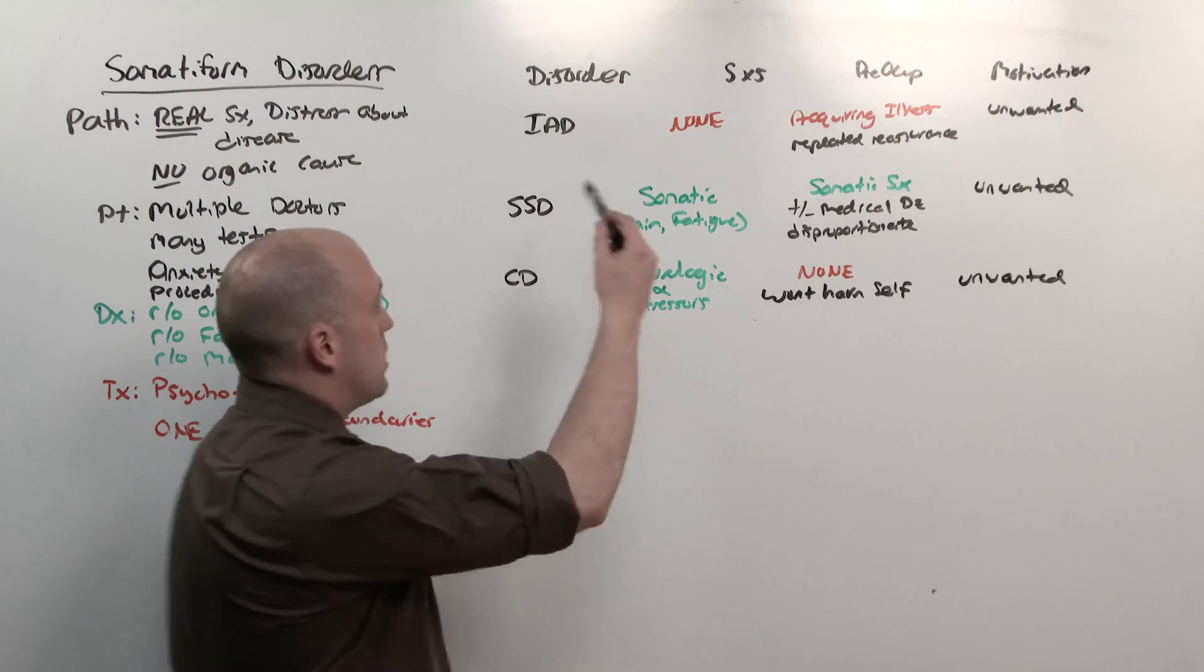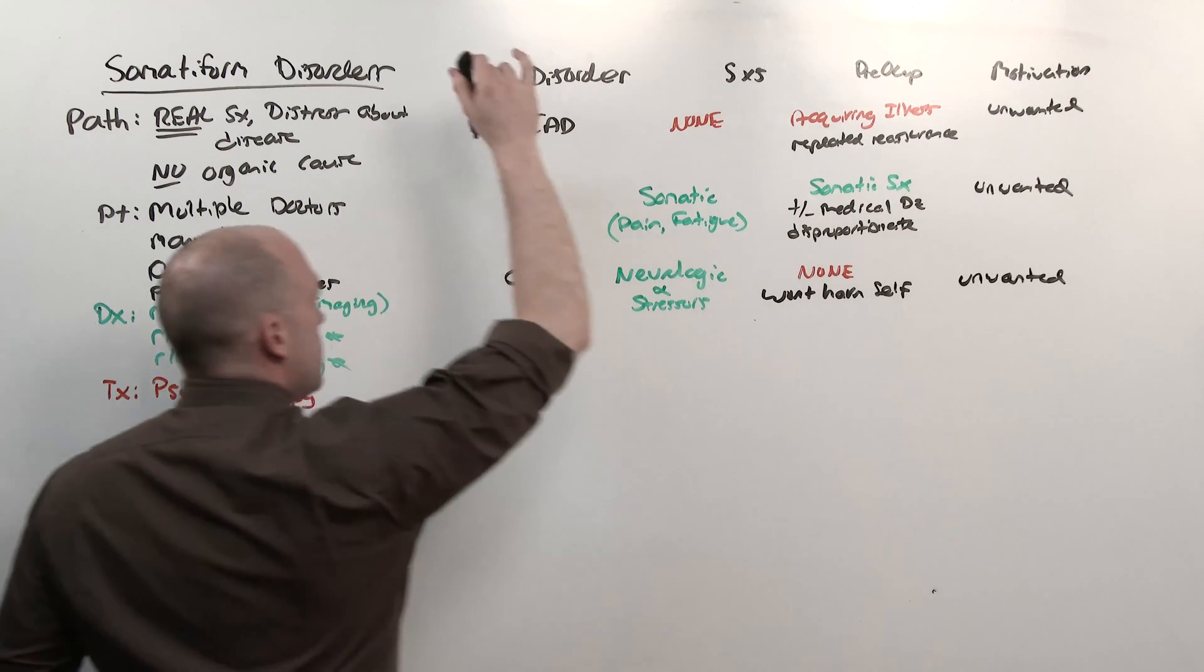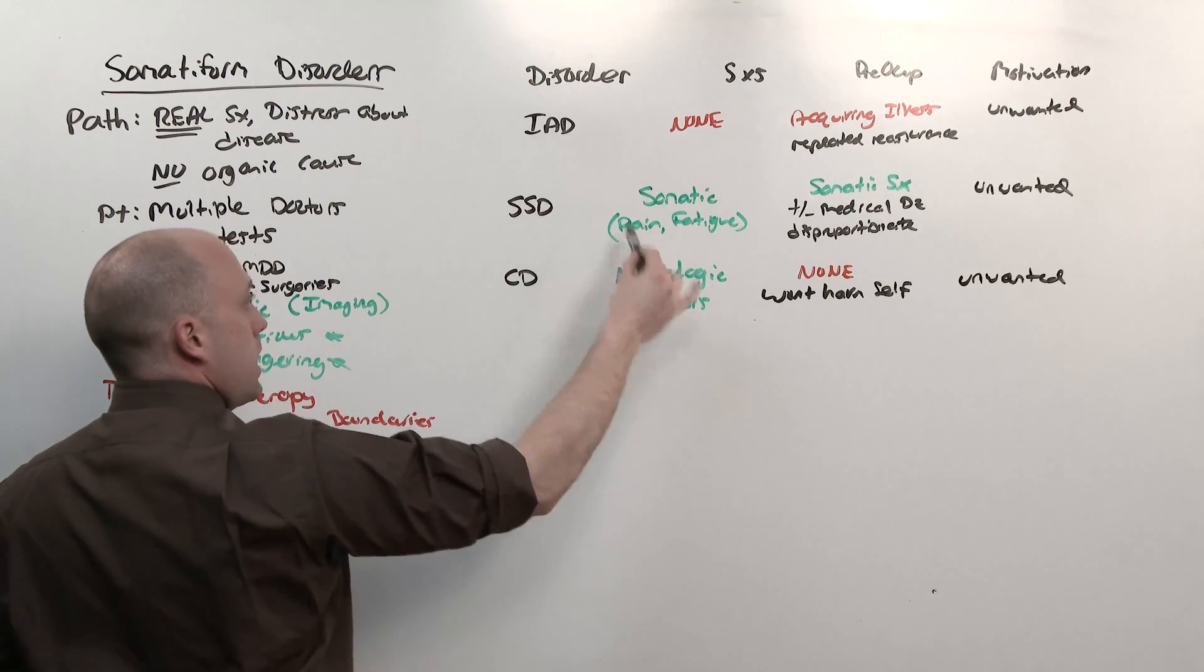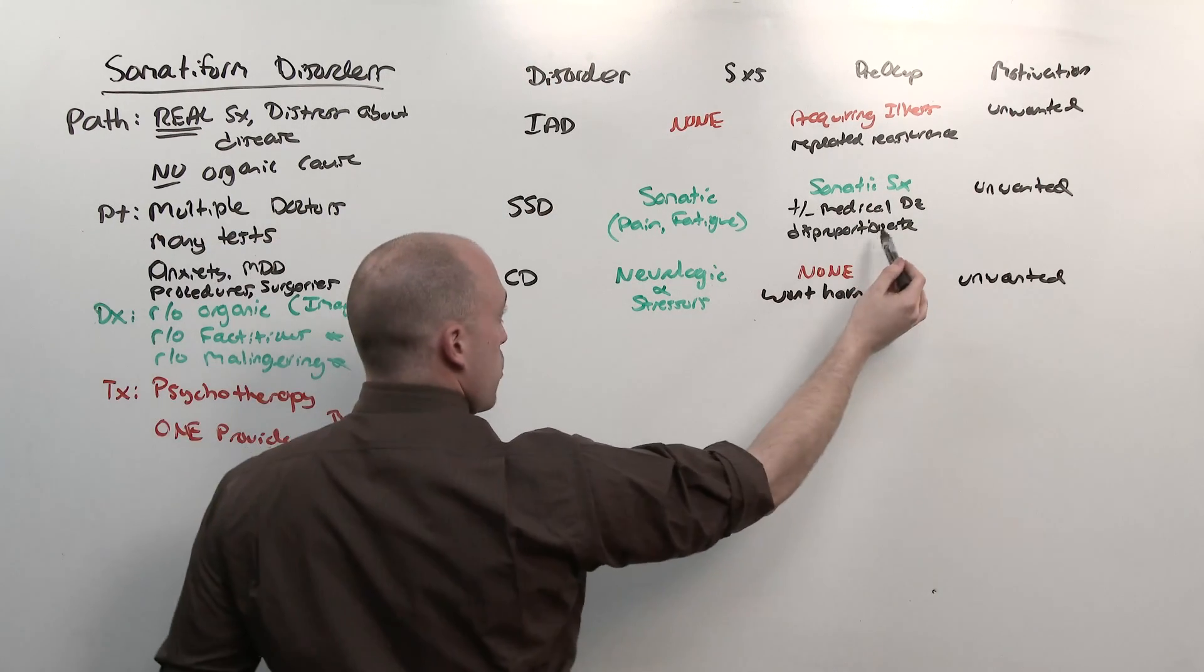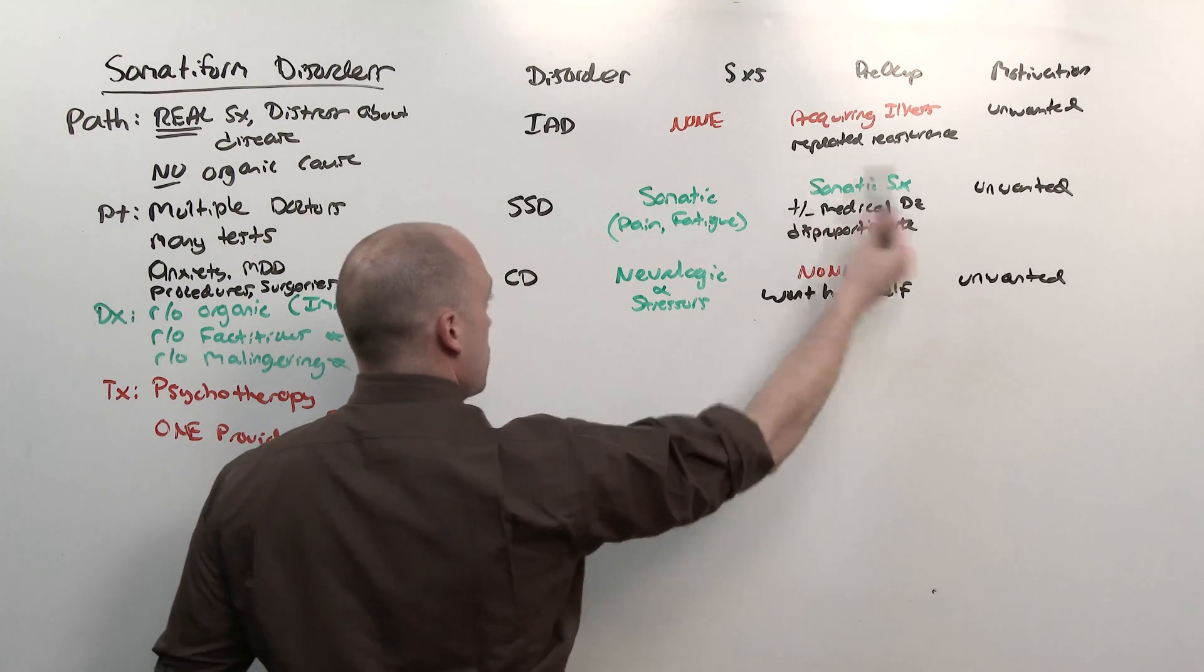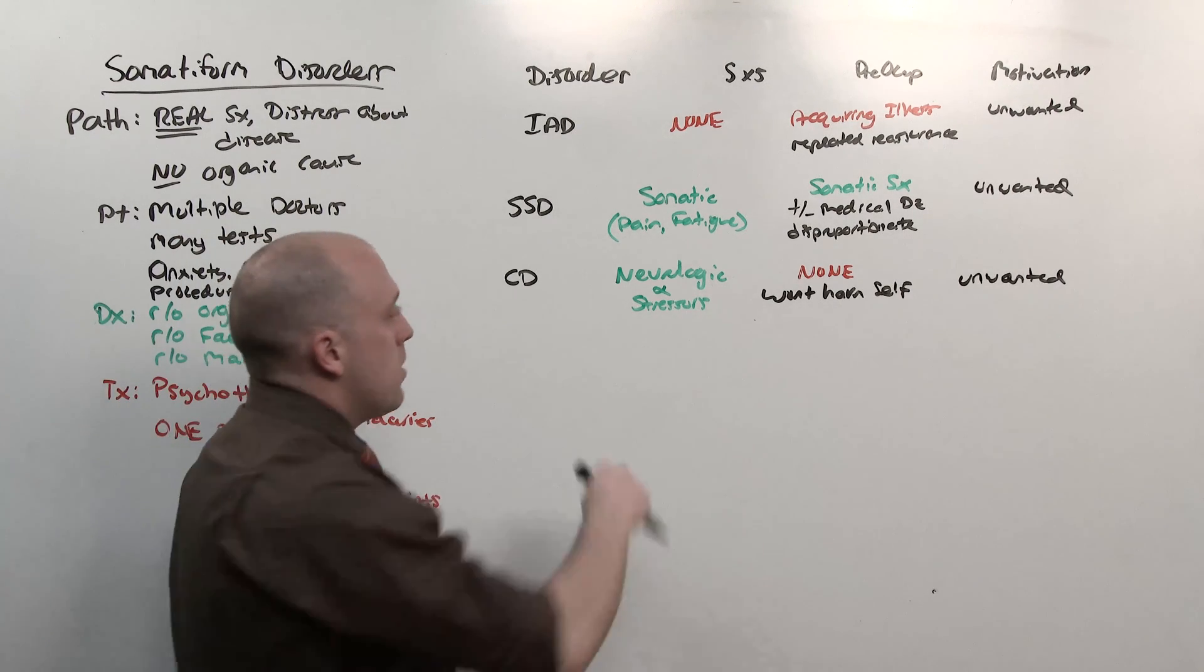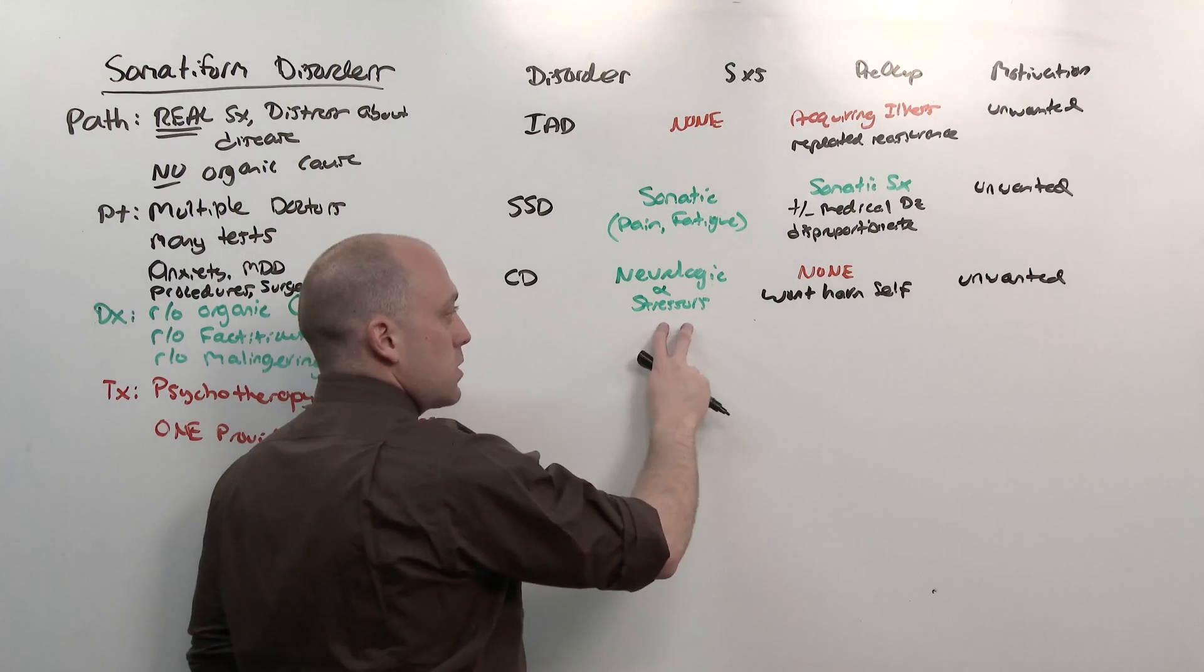So I want you to see these three diseases, illness anxiety disorder, preoccupation with acquiring an illness despite reassurance. Somatic symptom disorder is pain or fatigue, and it is disproportional to the medical disease, and they're preoccupied with the somatic complaint, and conversion disorder is a neurologic disorder, motor sensory, that is related to an acute stressor.